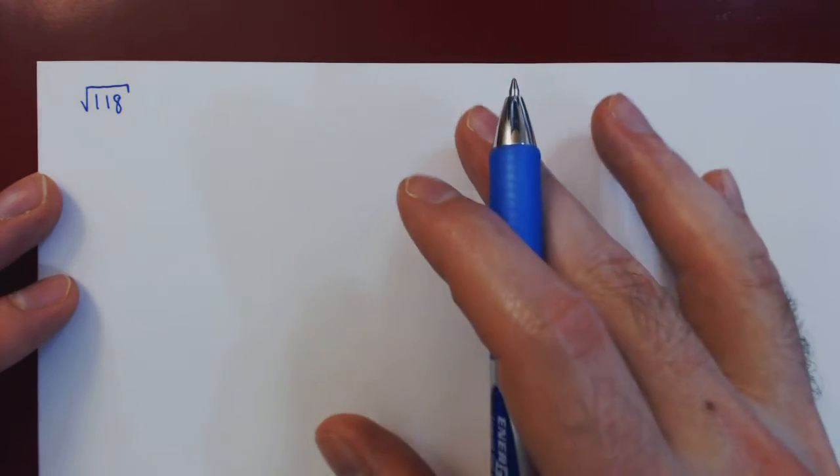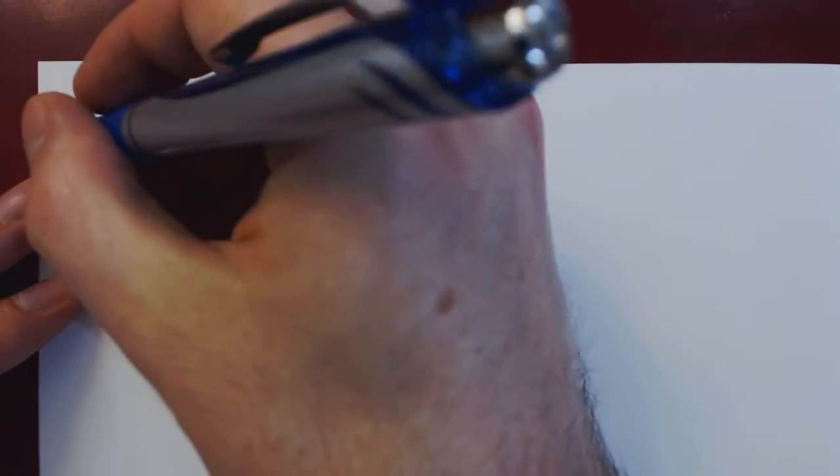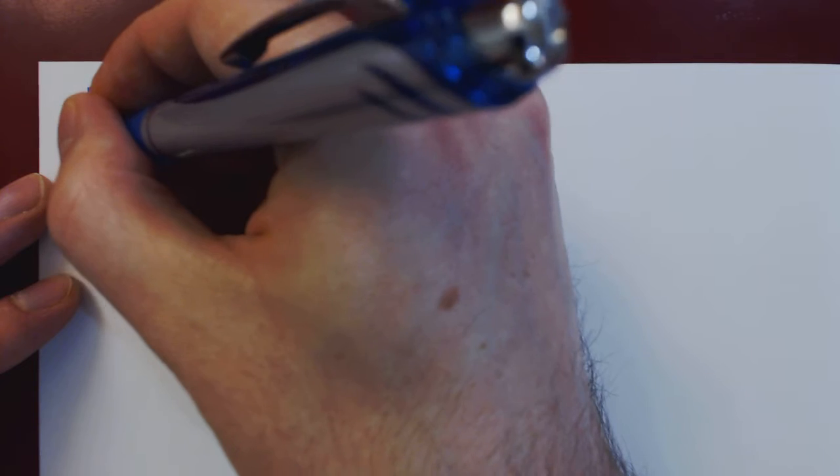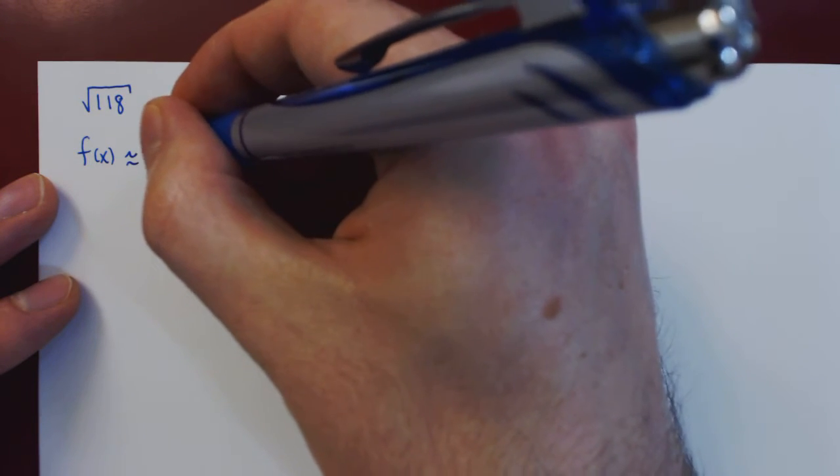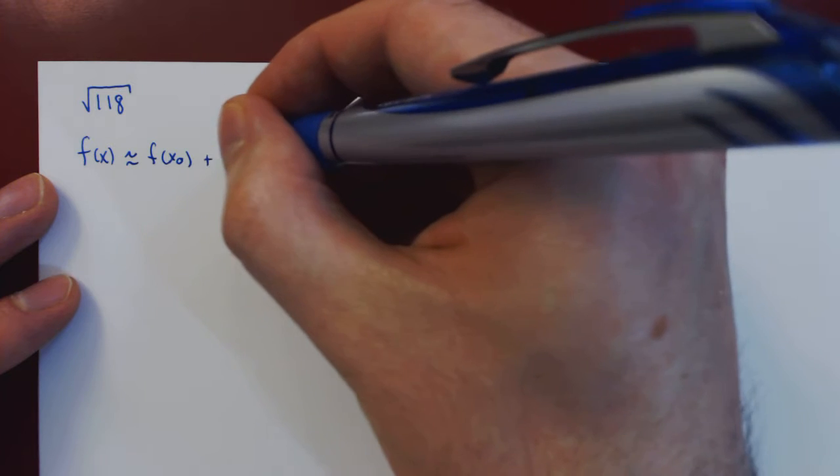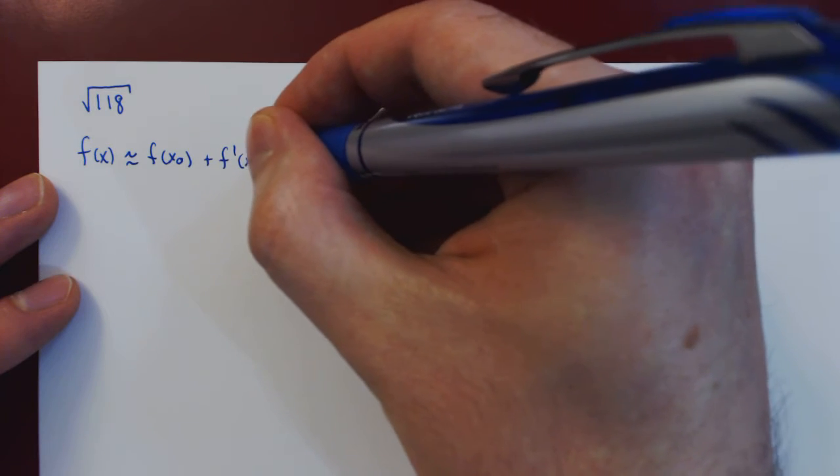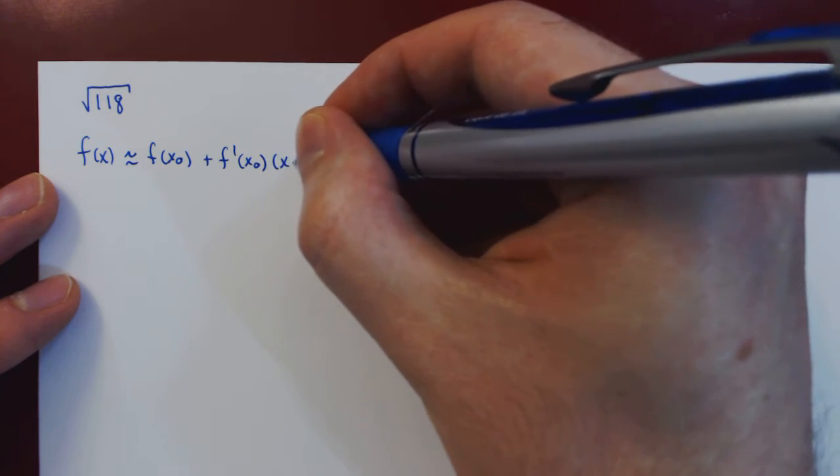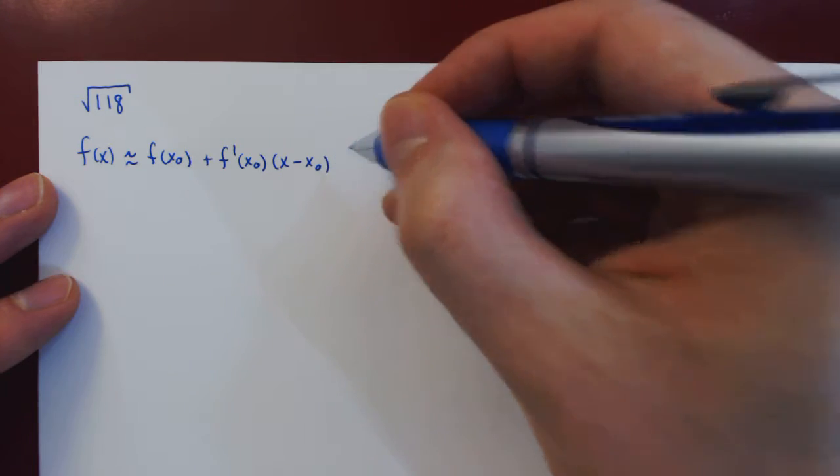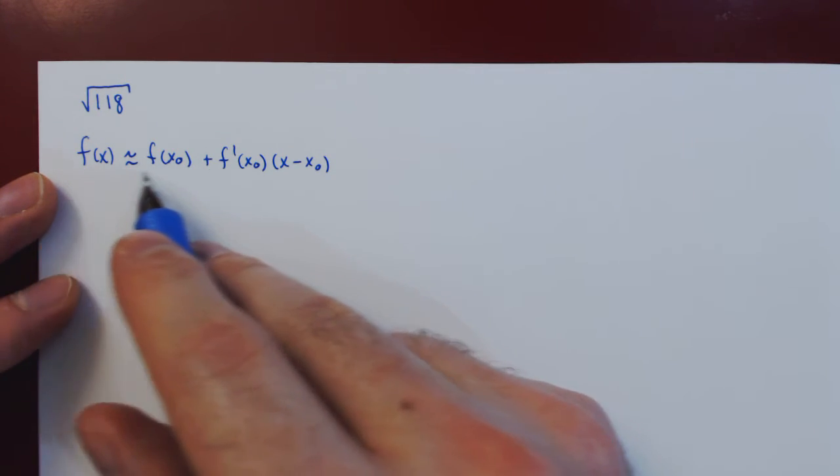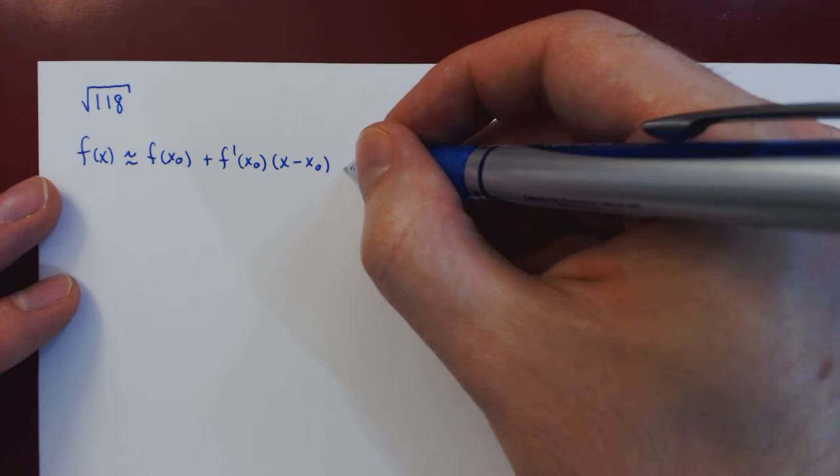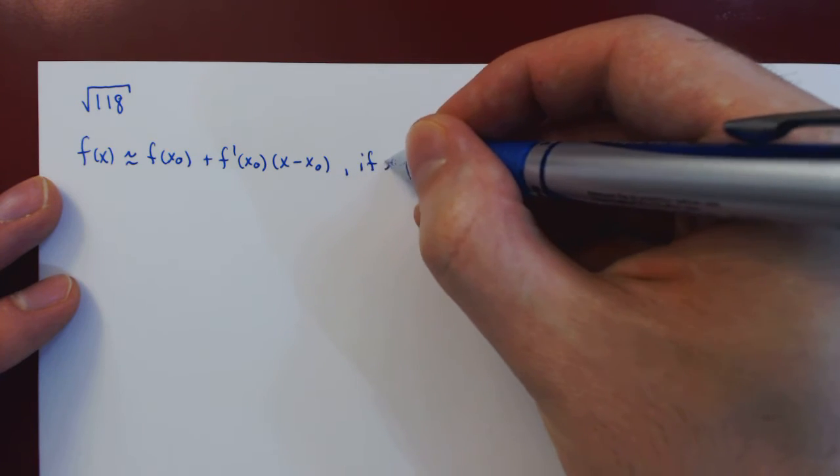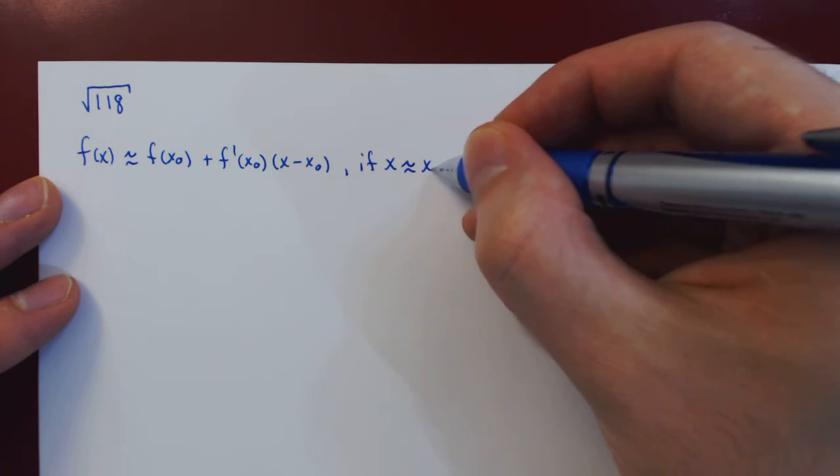So first, let us recall the statement of linear approximation, and that is that the values of a function are very close to the values on its tangent line at x₀. But of course, the estimation is only fairly accurate if we choose a value of x that is close to the point of tangency.